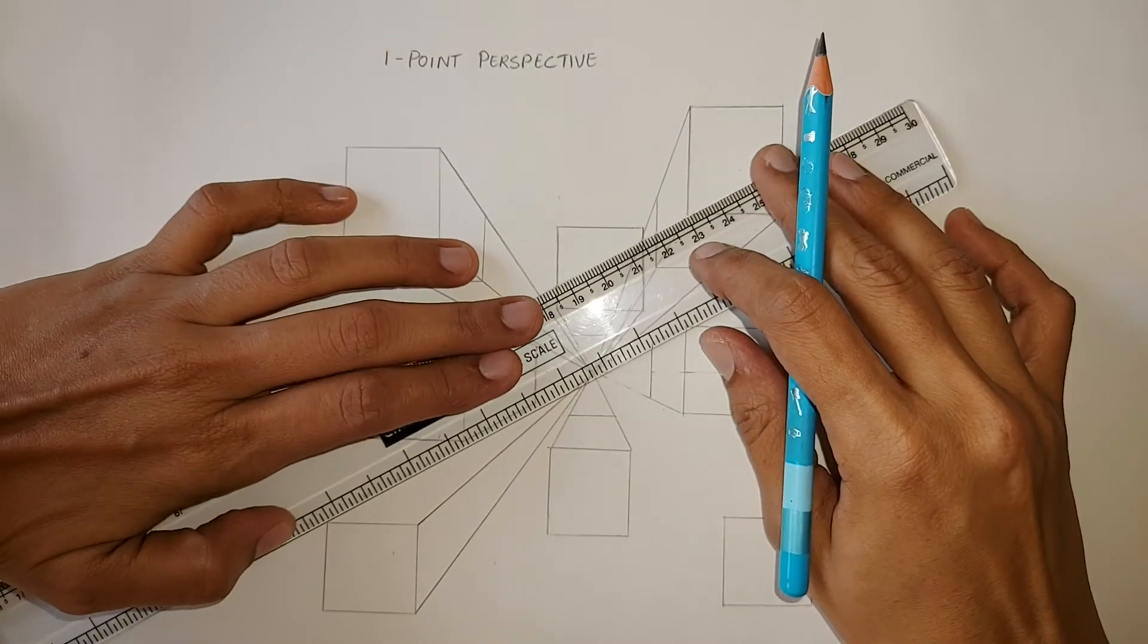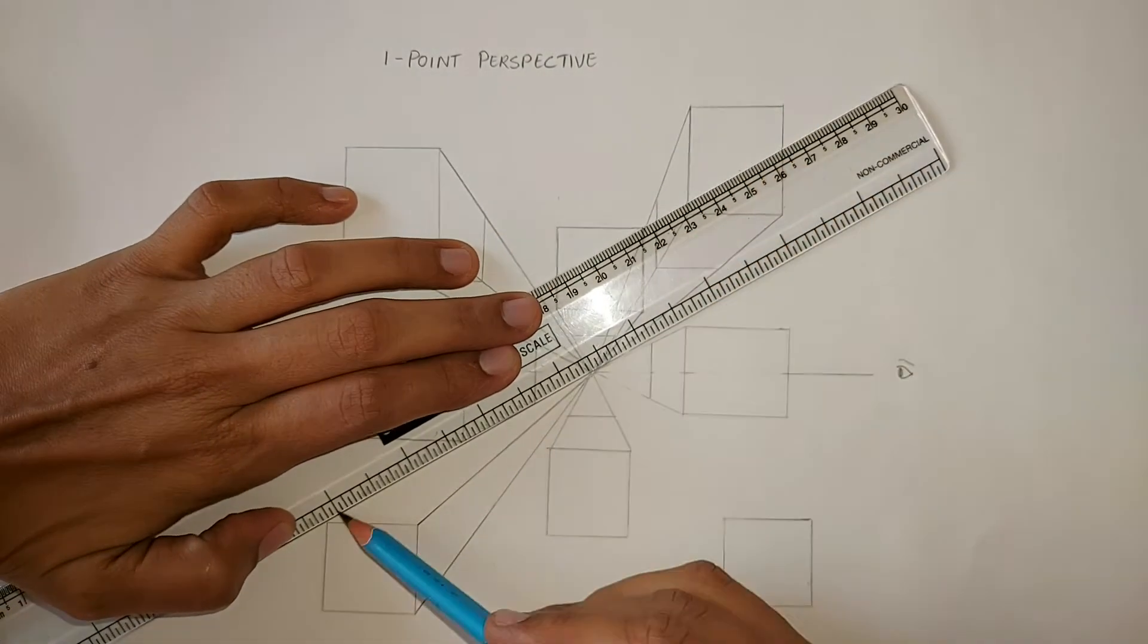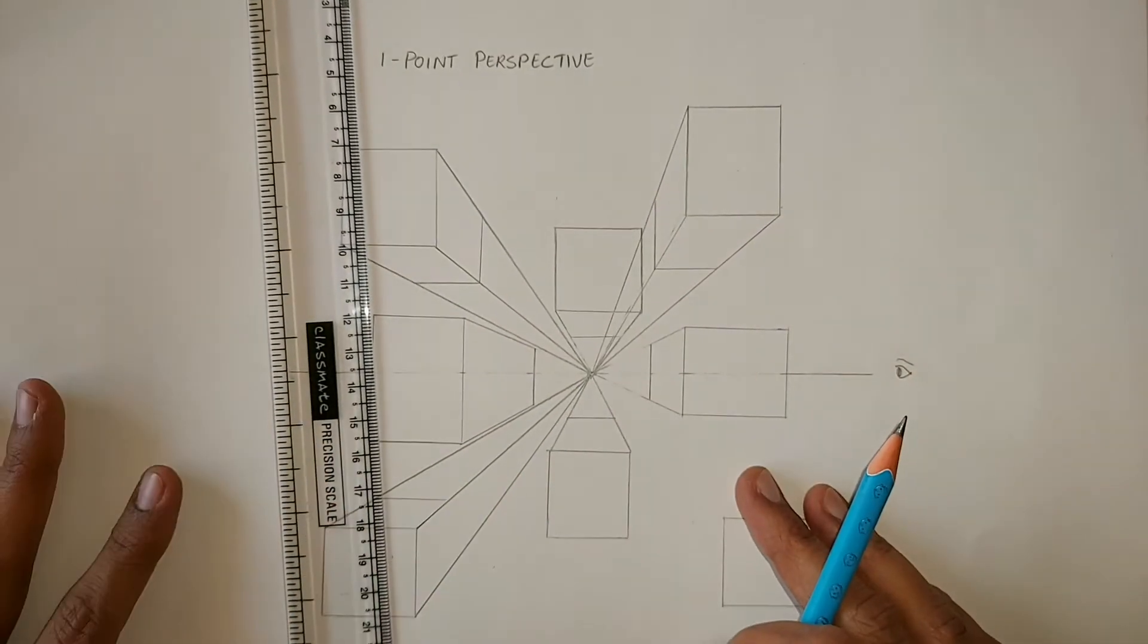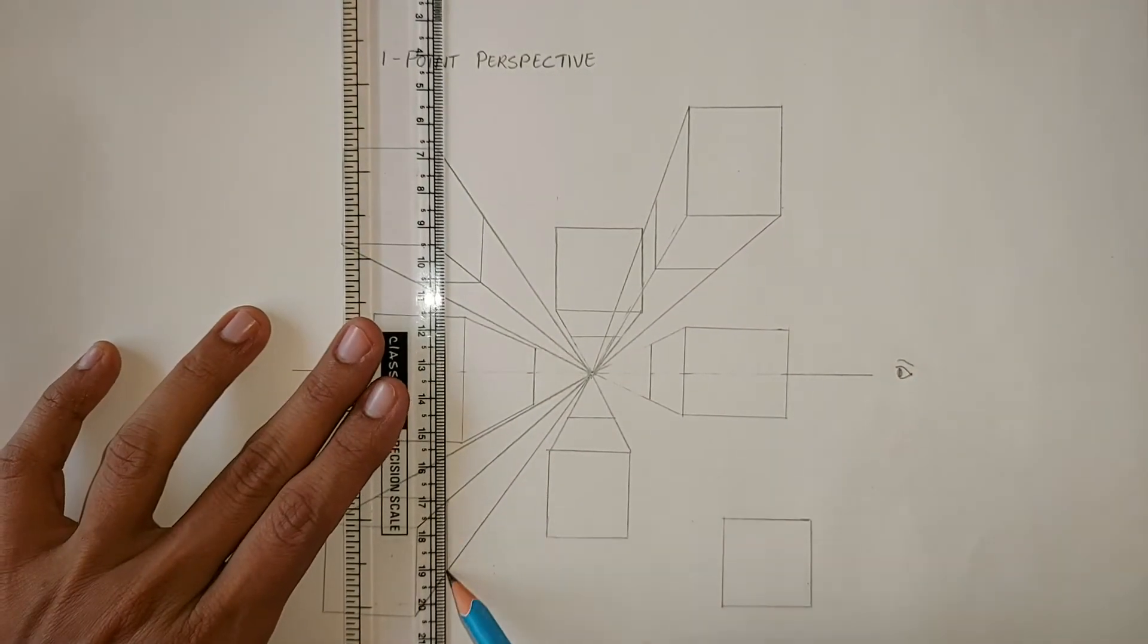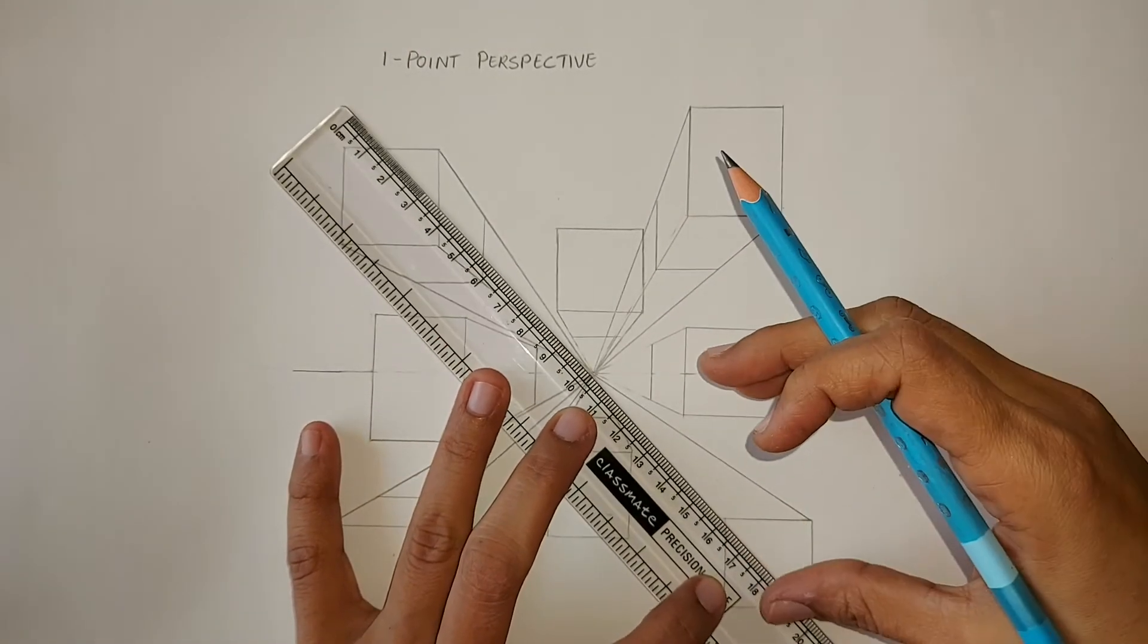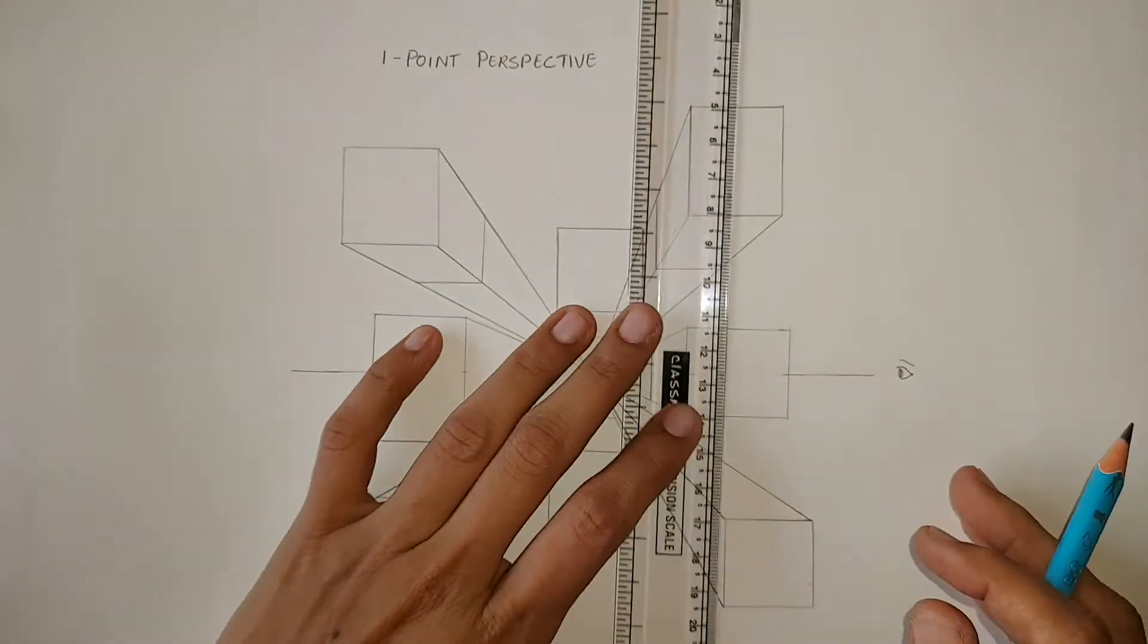Again, we are going to draw the converging lines from each of the corners that are unobstructed by the object. Now, we will draw the parallel lines to create the top of the shape. So, remember anything that is below the vanishing point, we will be looking at it from the top.